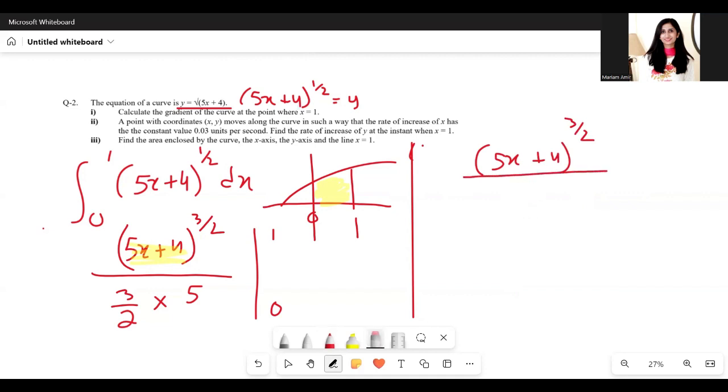We can write this as multiplied by 2/15. This is the result of integration, and now we have to substitute 1 and 0.